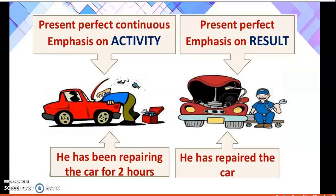Present perfect continuous and present perfect tense is our topic for today. We use present perfect continuous tense to emphasize on activity — that means some activity has been going on. For example, 'he has been repairing the car for two hours,' meaning he is continuing the activity. And we use present perfect when we emphasize on result — that means we have completed our task. For example, 'he has repaired the car.' Here the person has completed his task of repairing and has given us a result.